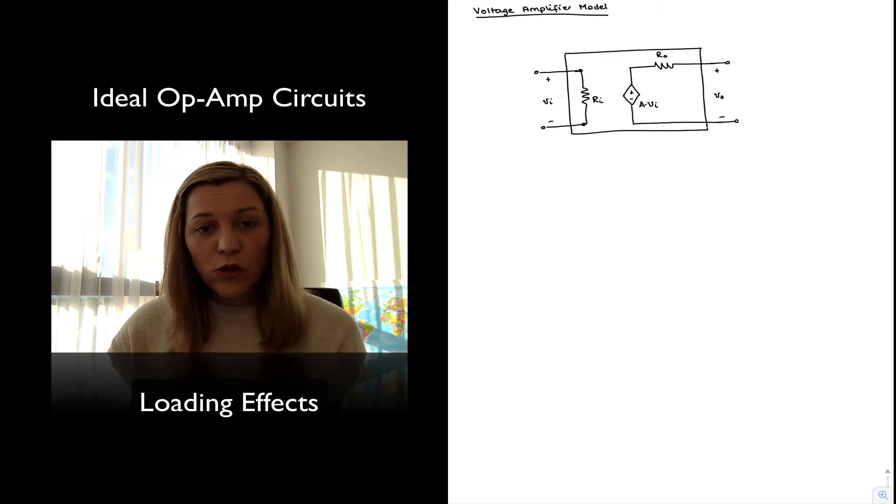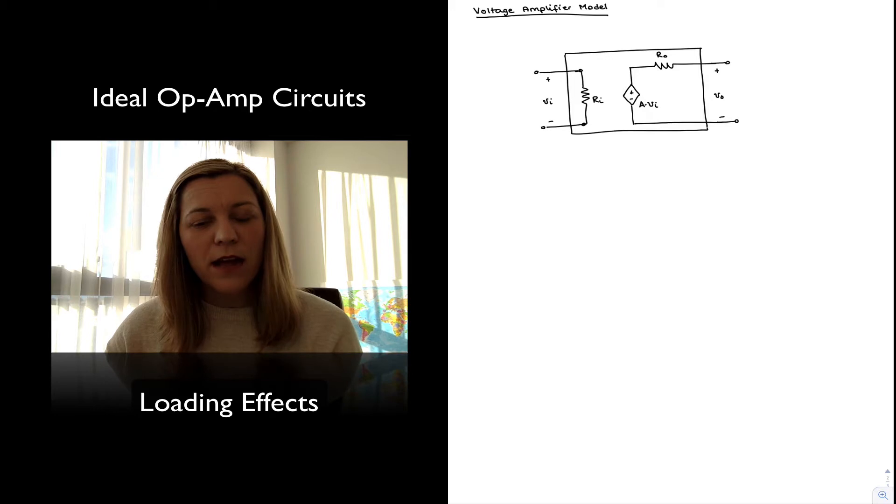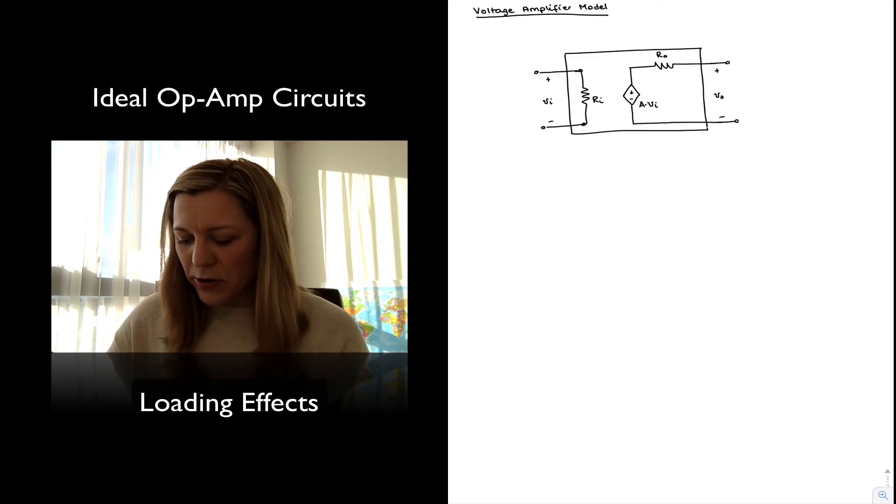Normally, we also include in our model the input resistance R_in and the output resistance R_out. The reason we do that is so we can take into account the effects of this voltage amplifier being connected to a source at the input, a signal source, as well as a load at the output, and what kind of loading effects those are going to have on the overall performance of the amplifier.